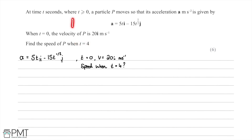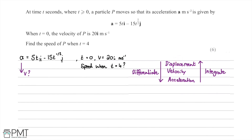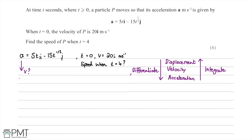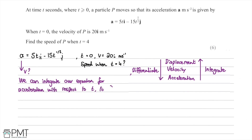We're dealing with vectors throughout, and at the final step we find speed from the velocity vector's magnitude. We know that differentiating displacement gives velocity, and differentiating again gives acceleration. So working backwards, to go from acceleration to velocity we integrate. Therefore, we integrate our equation for acceleration with respect to t to find an expression for velocity.